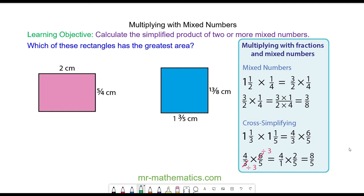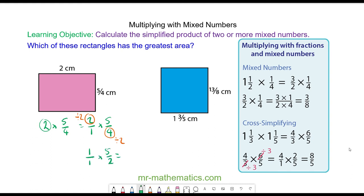OK, for the pink rectangle, we have the length of 2 multiplied by the width of 5 over 4. We're going to write this 2 as a fraction: 2 over 1 multiplied by 5 over 4. We can cross-simplify here and here, dividing both by 2. So we have 1 over 1 multiplied by 5 over 2. The area is 5 over 2, or 2 and 1 half centimetres squared.